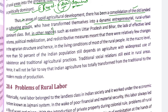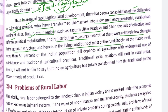However, in some regions like Eastern UP and Bihar, lack of effective land reforms, political mobilization, and redistributive measures meant there were relatively few changes in the agricultural structure, and hence the living conditions of most of the rural people remained poor. So where the transition towards capitalistic mode of production occurred, the rural-urban dominant class emerged — but in the remaining places where land reforms were not properly implemented and land was not redistributed, the agrarian structure remained almost the same.